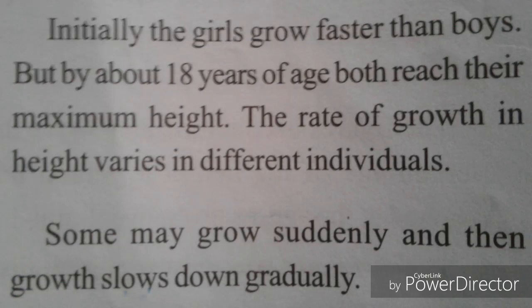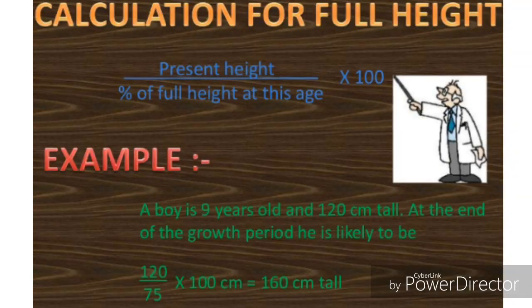Now let us learn about these changes in detail. Initially, girls grow faster than boys, but by about 18 years of age both reach their maximum height. The rate of growth in height varies in different individuals; some may grow suddenly and then growth slows down gradually. There is a formula for calculating maximum height: present height divided by percentage of full height at this age, into 100. For example, a boy is 9 years old and 120 centimeters tall; at the end of the growth period, he is likely to be 160 centimeters tall.